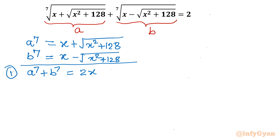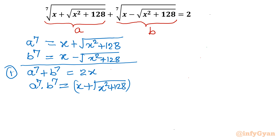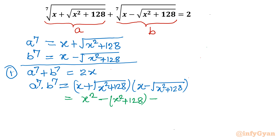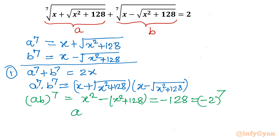Now if I take the product A⁷ times B⁷, I write the bracket (x plus square root of (x² + 128)) times (x minus square root of (x² + 128)). This is in the form (A+B)(A-B), so we get the difference of two squares: x² minus (x² + 128), which equals minus 128, which is minus 2 raised to the power 7. So on the left side we have (AB)⁷, and on the right side minus 2⁷, meaning AB = minus 2.